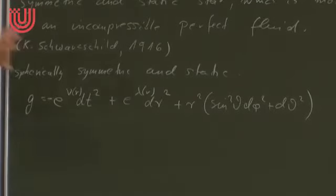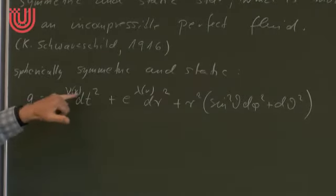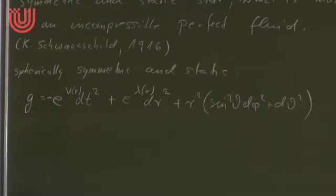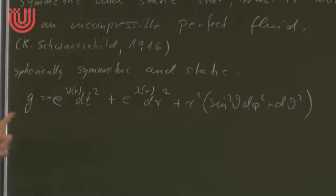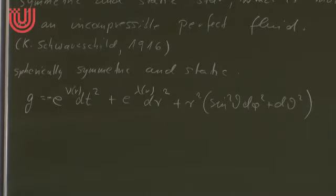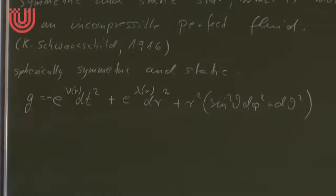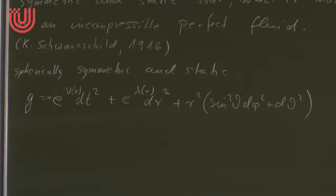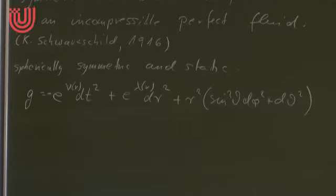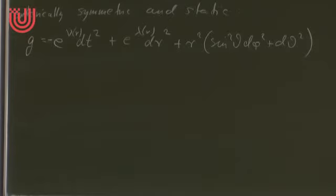We began by assuming just spherical symmetry, not requiring the metric to be static, so there could be a t-dependence. Then we found for the exterior vacuum metric that this t-dependence could not be there — that was Birkhoff's theorem. For the inside, in principle we could have a time dependence; there's no general theorem preventing it. But we want to consider a static star, so we put here only an r-dependence. The metric must also be a solution of Einstein's field equation.